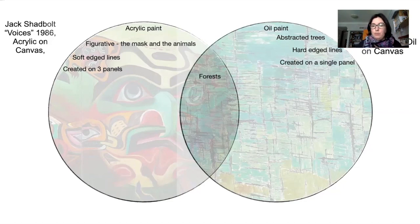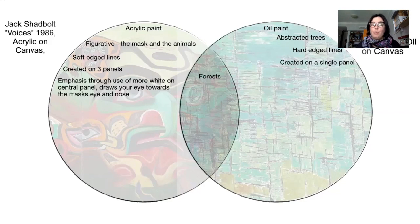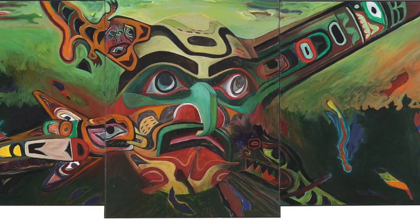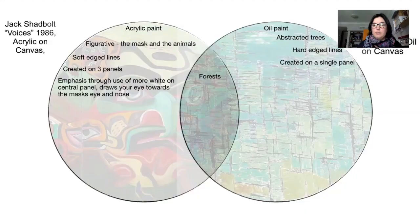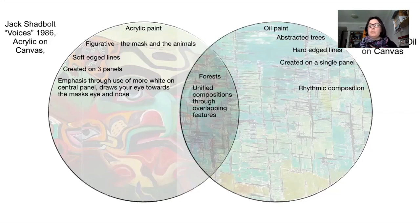Both pieces include forests, although with Nakamura it is the entirety of the image, while in Shadbolt's it's the background — you can see a tree line in the back. The emphasis through the use of more white on the central panel draws your eye towards the masks, the eye and the nose, in Shadbolt's piece. In Nakamura's you've got a rhythmic, unified composition through overlapping features. In both pieces the artist has used lines, or creatures and shapes, that overlap each other and create a unified field as you look at things.